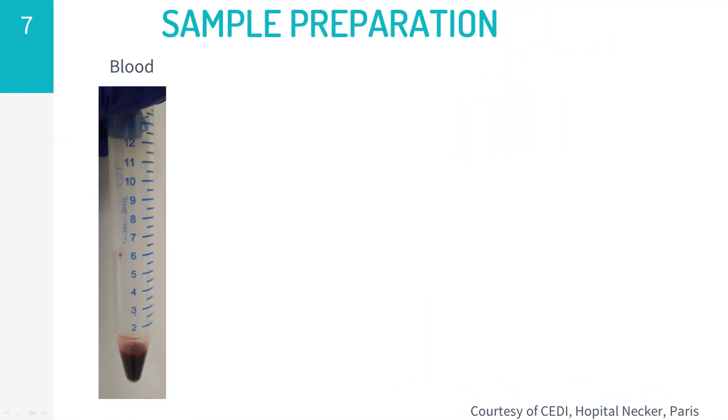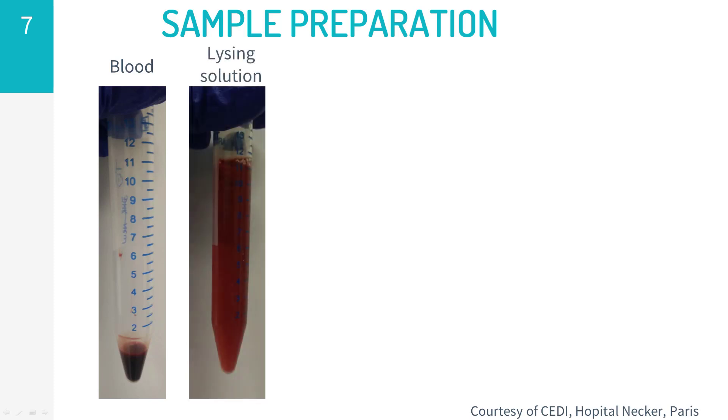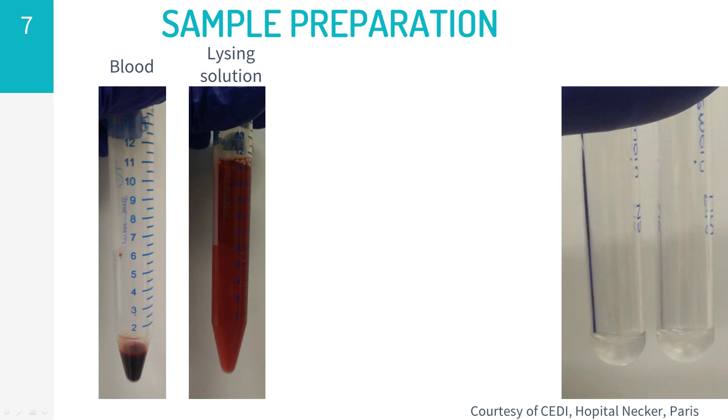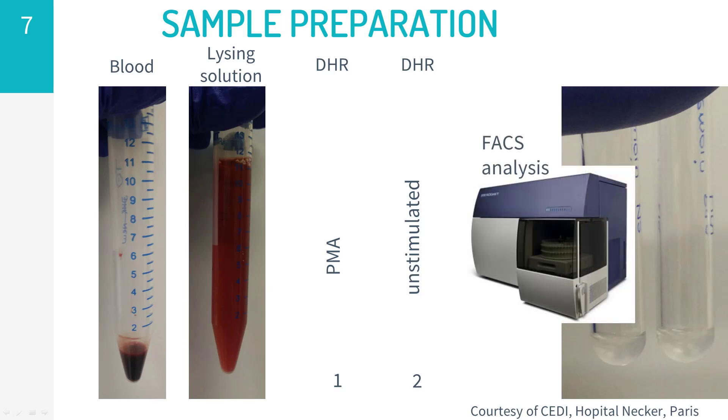The test consists of several different steps. After lysis of red blood cells, leukocytes are briefly incubated with dihydrorhodamine. Catalase can be added to eliminate excess hydrogen peroxide. Subsequently, phorbol 12-myristate 13-acetate, or PMA, is added to half of the sample in order to activate the neutrophils and trigger release of reactive oxygen species. A parallel tube of the other half of the leukocytes is left unstimulated and serves as a reference. Samples should be acquired in a timely fashion at the flow cytometer.